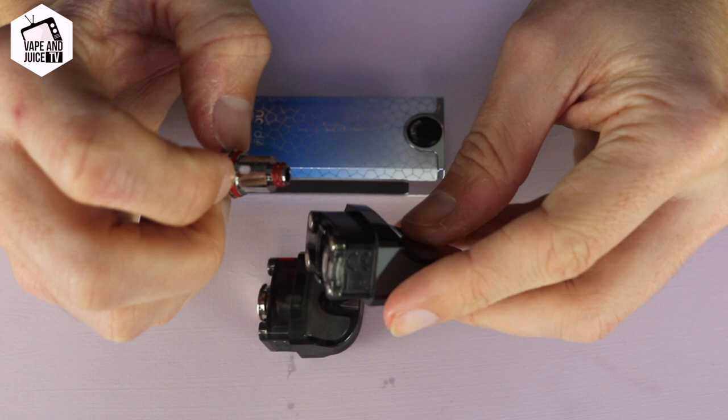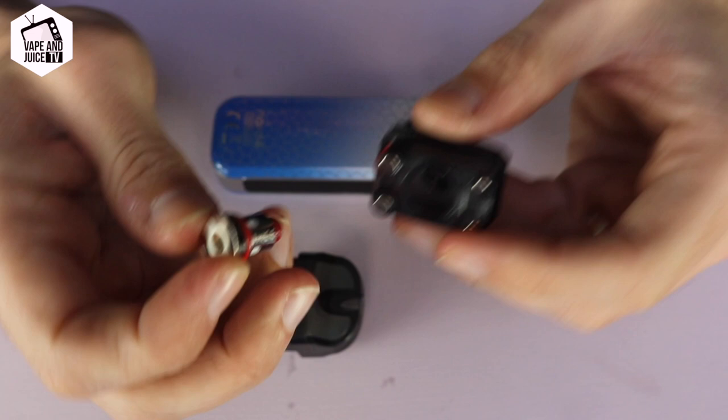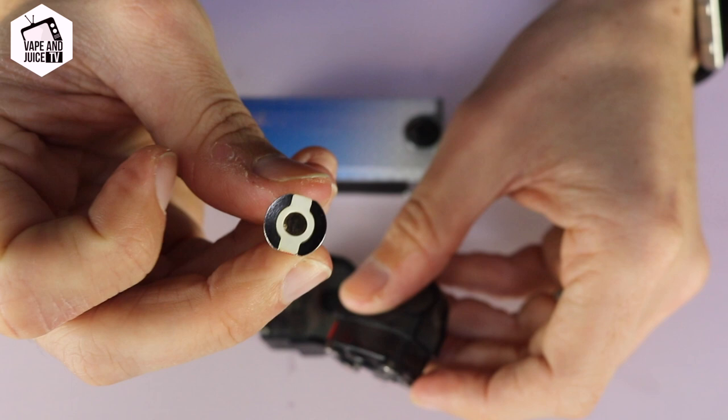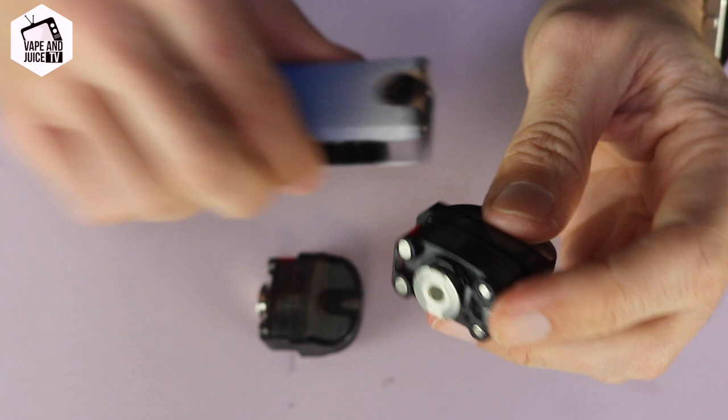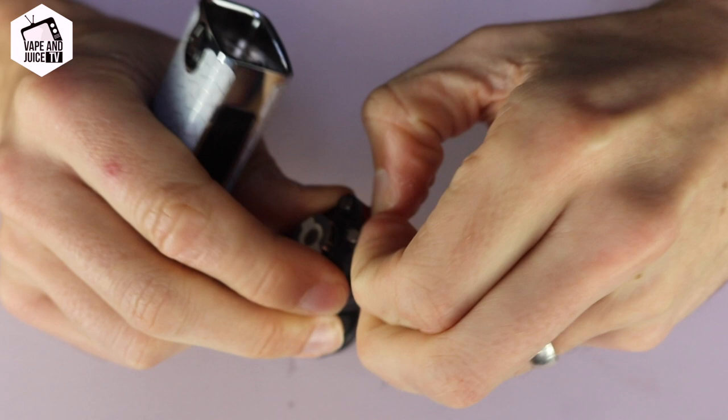Otherwise maybe hold it sideways or just do it over a sink. You just line up the straight lines—you can see the straight lines on there and then the straight lines on the edges of the coil here. We just line them up like so, that fits into position like that, and then we pop the juice in the side of the red rubber cap.